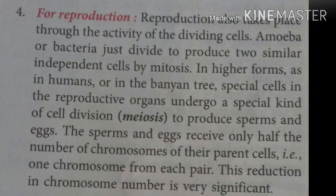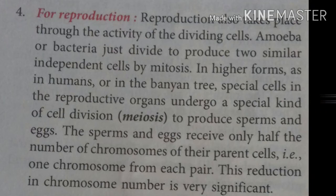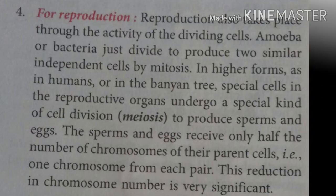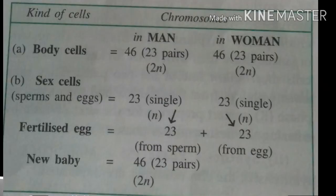If the parent cells have 10 chromosomes, then all 4 daughter cells contain 5 chromosomes each. This is necessary because sex cells — sperm and egg — fuse in the process of fertilization, so the chromosome number will be balanced. The chromosome number in the zygote becomes n plus n, then 2n, like in the parent cells.